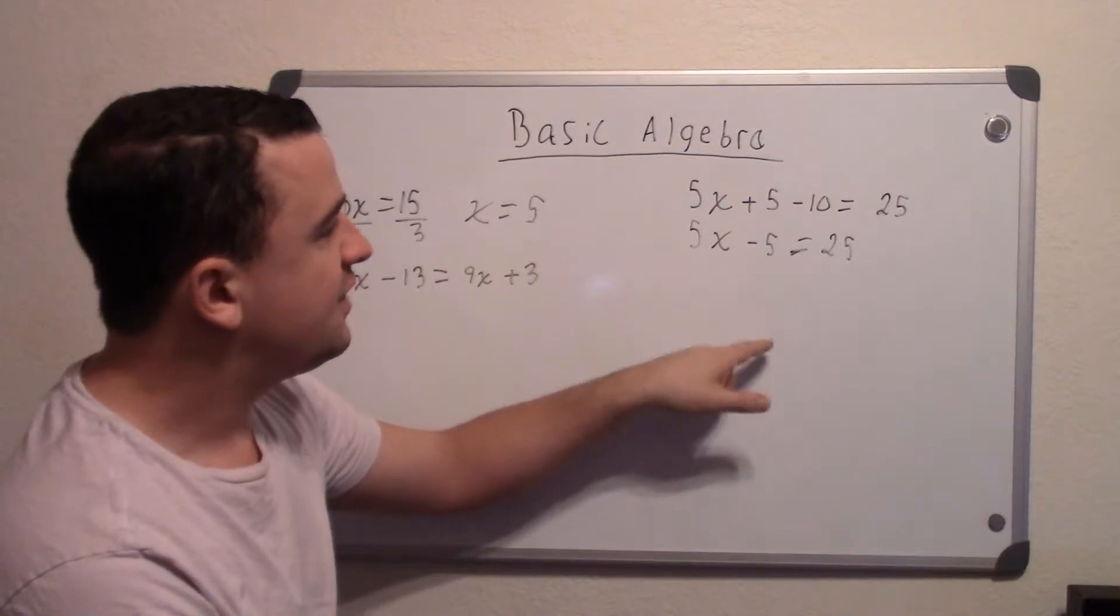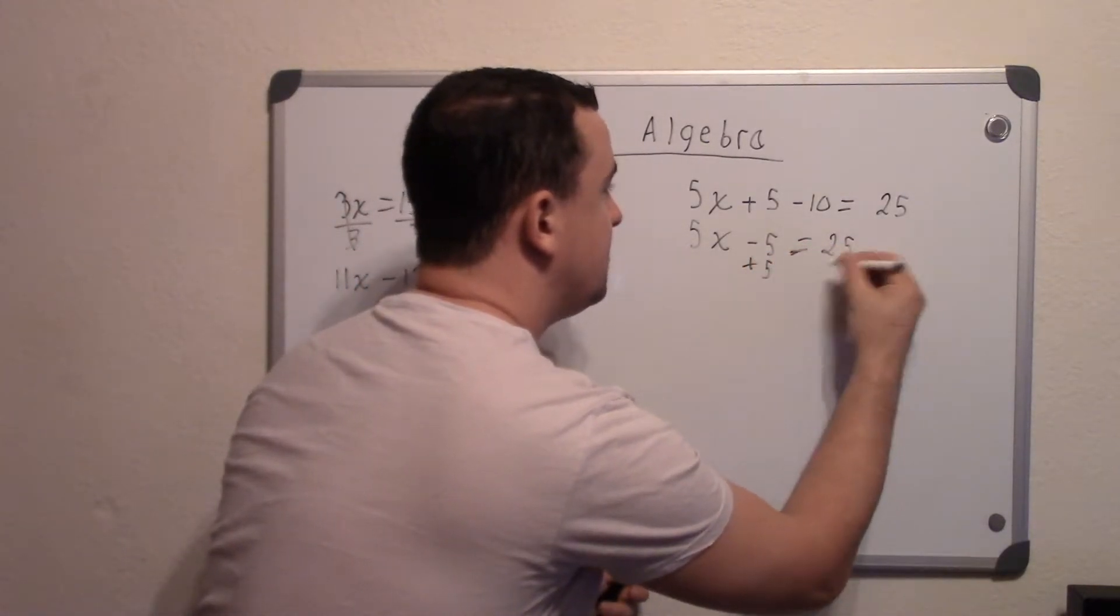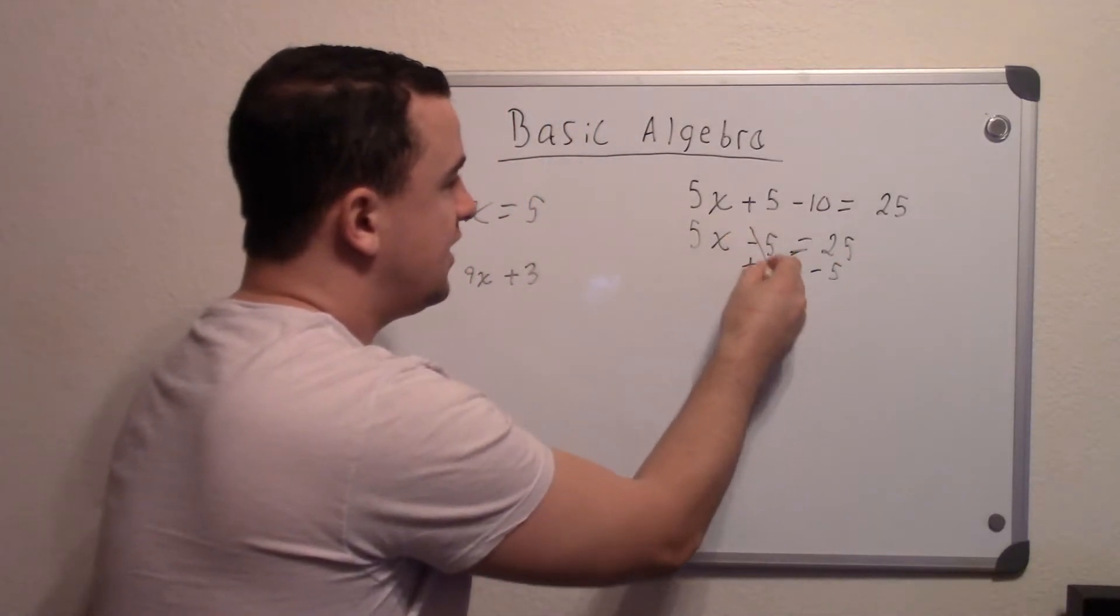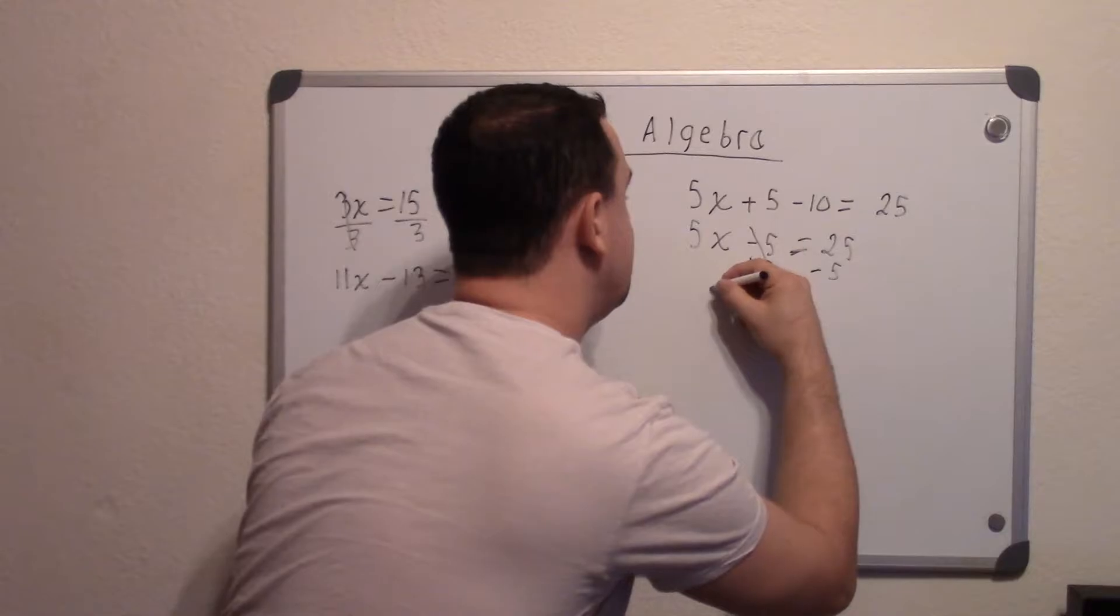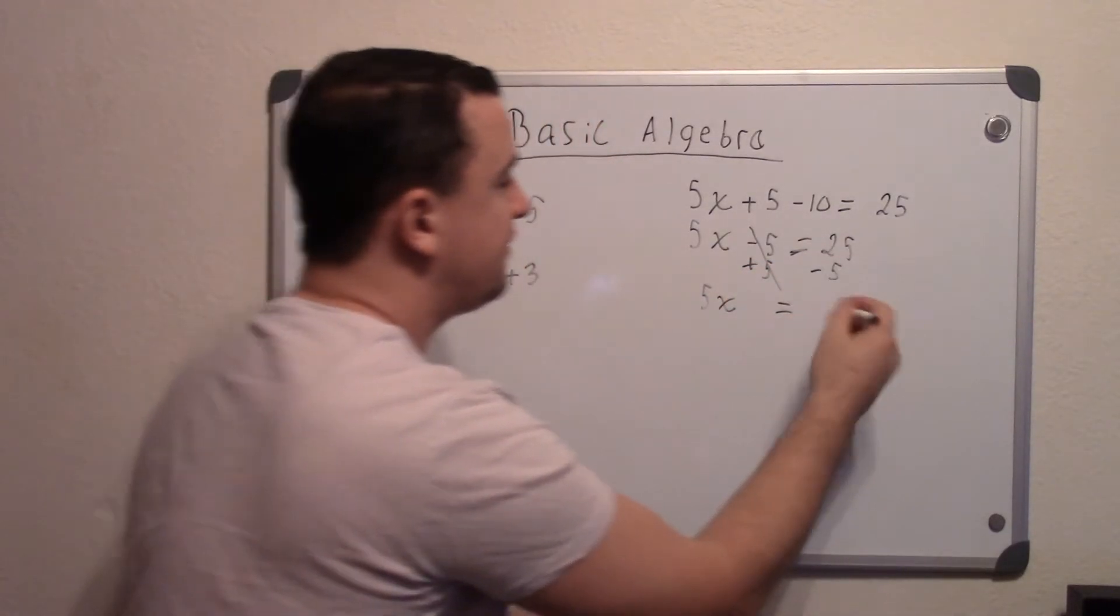So because we're subtracting 5, we do the opposite. We add 5. And we do it to both sides. So now these cancel out. And you just bring this down. 5x equals 25 minus 5 is 20.